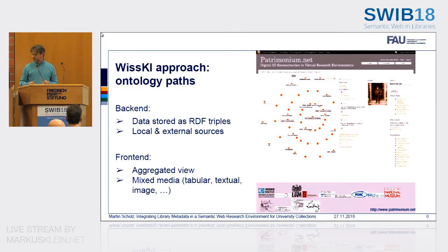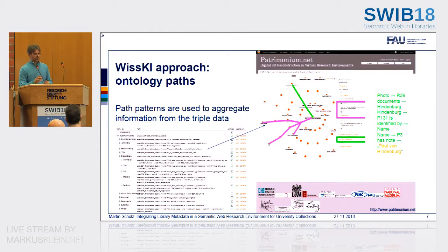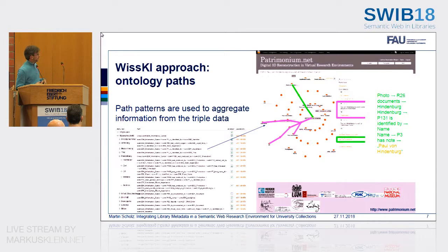How is this information combined? In WISKII we have something we call ontology paths, which is mainly a mapping between graph patterns — every field or data item in our front end matches to a path through the ontology graph. That's why it's called an ontology path. There is also a graphical user interface for managing all these paths, arranging and grouping them, so that you can compose the whole front end.